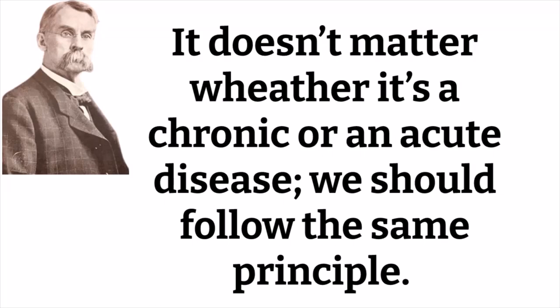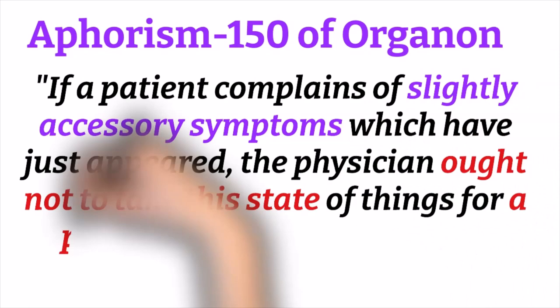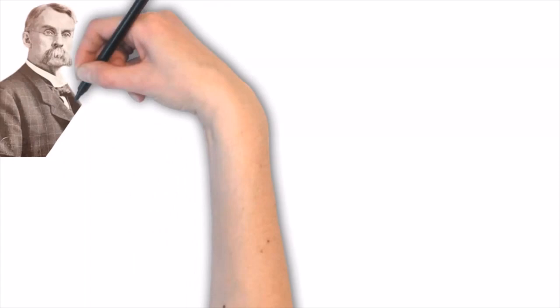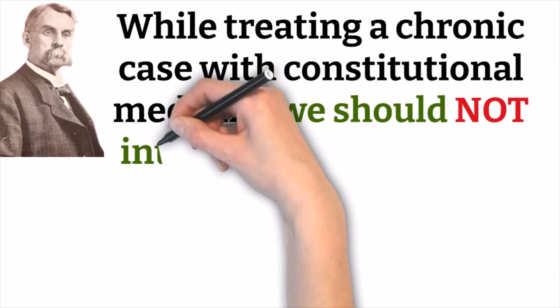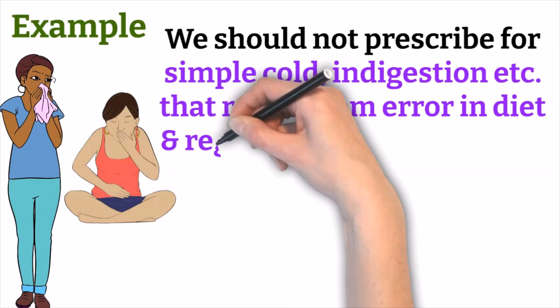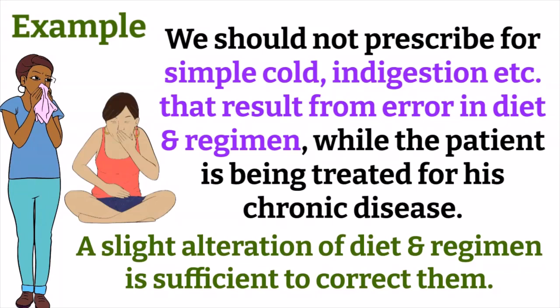Kent then discusses Aphorism 150, which says that if a patient complains of slightly accessory symptoms that have just appeared, the physician ought not to take this as a perfect malady that seriously demands medicinal aid. While treating a chronic case with constitutional medicine, we should not interfere by prescribing for ordinary acute troubles or indispositions — such as simple cold or indigestion resulting from errors in diet and regimen. A slight alteration in diet and regimen is sufficient to correct them.